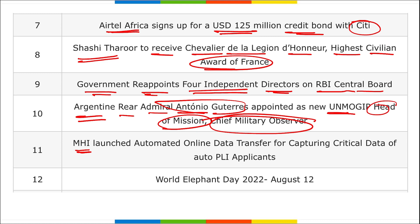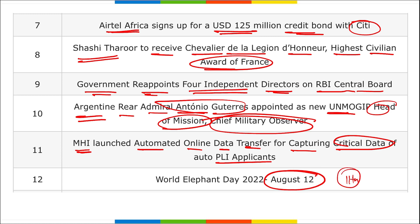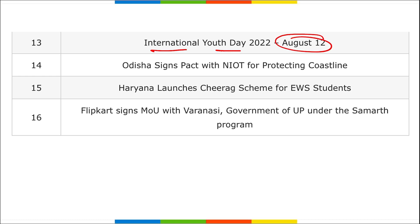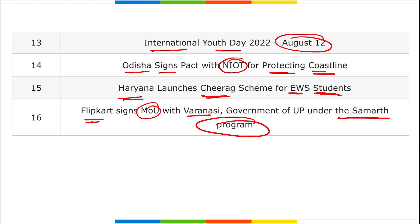Ministry of Heavy Industries launched automated online data transfer for capturing critical data of auto PLI applications. 12th August is observed as World Elephant Day — 11th anniversary in 2022. International Youth Day on 12th August with the theme 'Intergenerational Solidarity: Creating a World for All Ages.' Odisha signed a pact with NIOT for protecting the coastline. Haryana government launched the CHIRAG scheme for EWS students. Flipkart signed an MOU with Varanasi government under the Samarth program to help artisans and weavers list their products on the e-commerce platform.